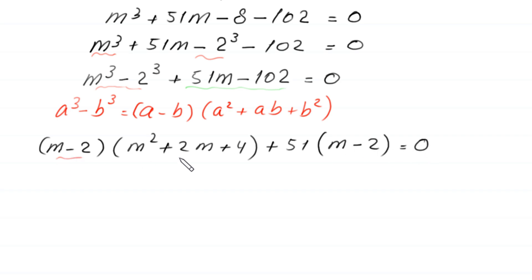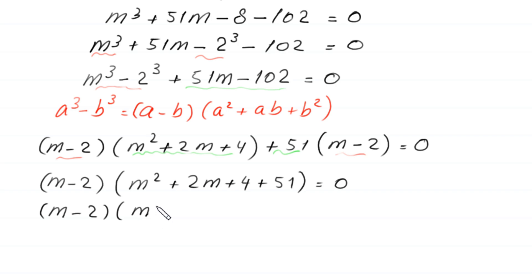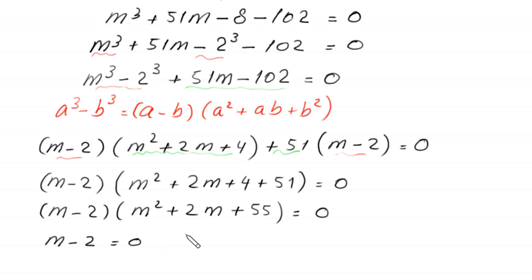Since (m − 2) is a common factor, we get (m − 2)(m² + 2m + 55) = 0. So either m − 2 = 0, giving m = 2, or m² + 2m + 51 = 0.